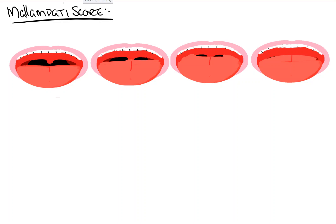Hi everyone. In this video from Count Backwards from 10, we're going to take a look at the Malampati score, define the anatomy, explain proper technique, and how to interpret the score. The score is named for the Indian American anesthesiologist Sheshagiri Malampati, and the score is used to predict the level of difficulty of intubation.